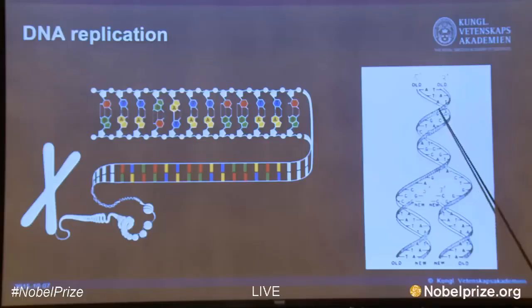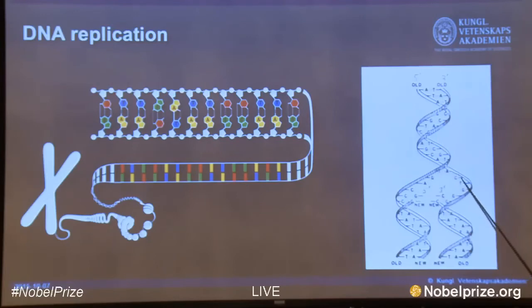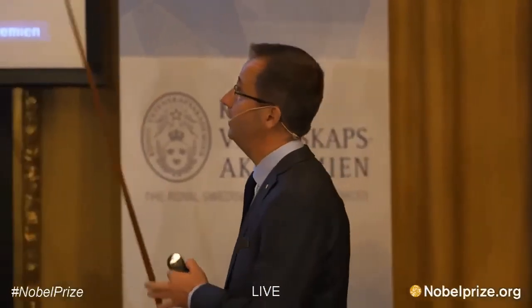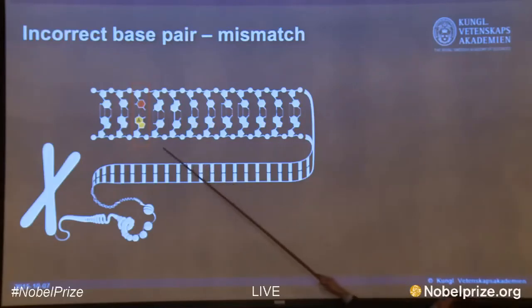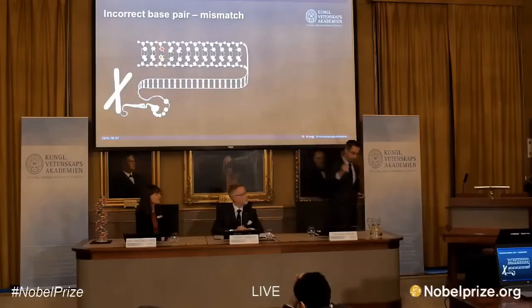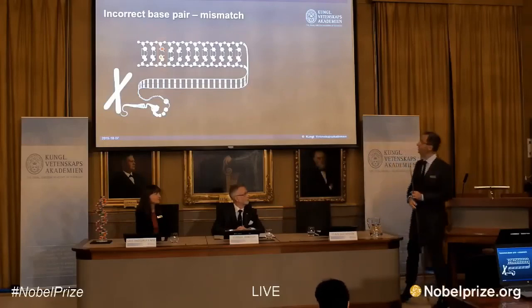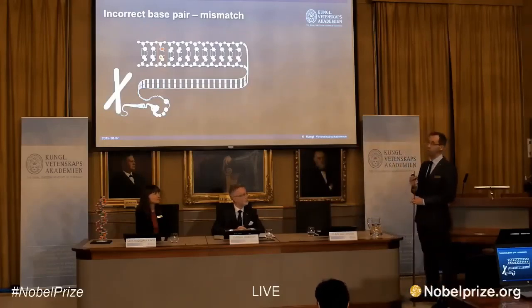What happens then is that the double-stranded DNA is split open. Each of the two original strands is used as a template to synthesize new companion strands. During this process, it is extremely important that we recreate exactly the same base pairs that were in the original DNA molecule, like this one — a T-A pair. But on very rare occasions, one in a million, there is actually an error introduced: a base comes in that shouldn't be there. We call these incorrect bases mismatches.